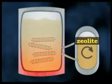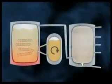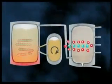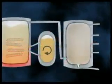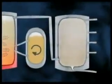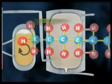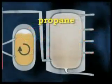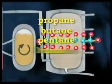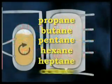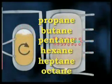Catalytic cracking is the major source of hydrocarbons with 5 to 10 carbon atoms in the chain. The molecules most formed are the smaller alkanes used in petrol, such as propane, butane, pentane, hexane, heptane and octane — the components of liquid petroleum gas.